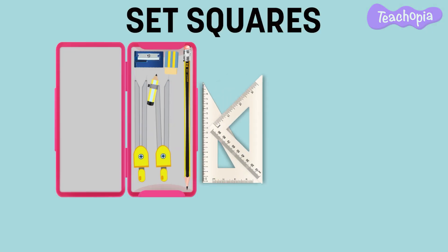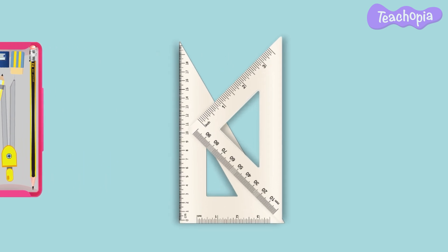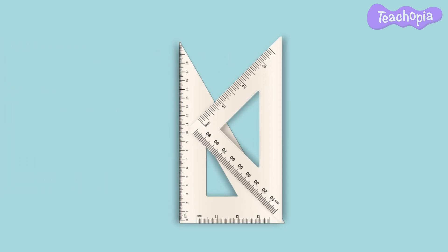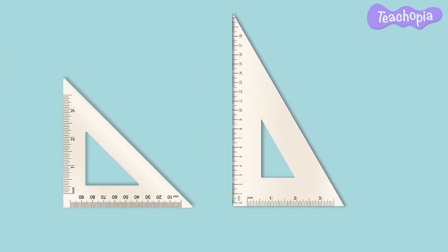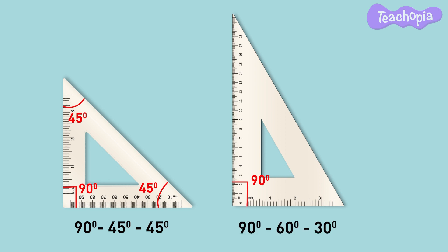Now let us learn to use the set squares. There are two set squares in a geometry box. The first set square has a 90 degree and two 45 degree angles. The second set square has a 90 degree, 60 degree and 30 degree angle. Set squares can be used to draw angles of 30, 45, 60 and 90 degrees quickly.